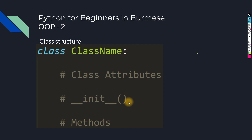Let's look at some class examples. Classes are defined using a keyword. The keyword is 'class', followed by a space and then the class name.